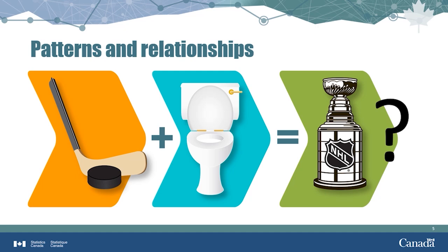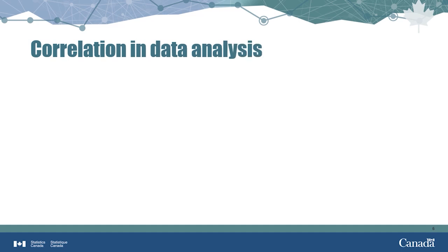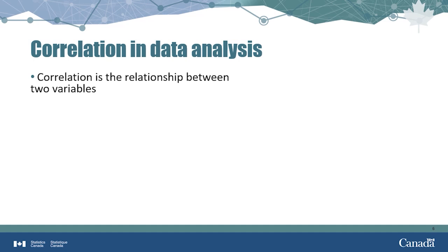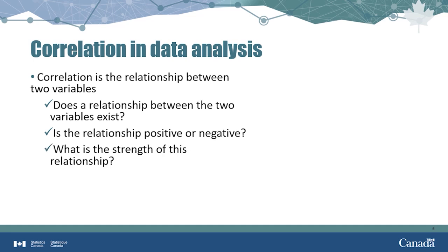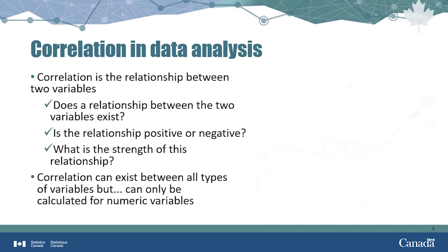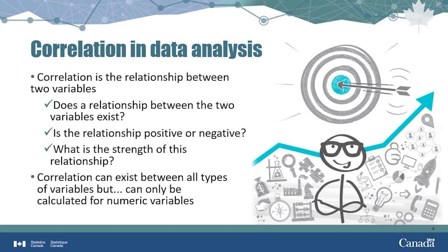This is a very important part of data analysis. In the world of data, correlation refers to the existence of a relationship between two variables. Correlation plays a big part in data analysis. When studying a potential relationship between two variables, it is important to ask yourself: Does a relationship exist? If so, is the relationship positive or negative? What is the strength of this relationship — is it a strong correlation, a weak correlation, or somewhere in the middle? Correlation can exist between all types of variables, but in statistics, correlation can only be calculated for numeric variables.